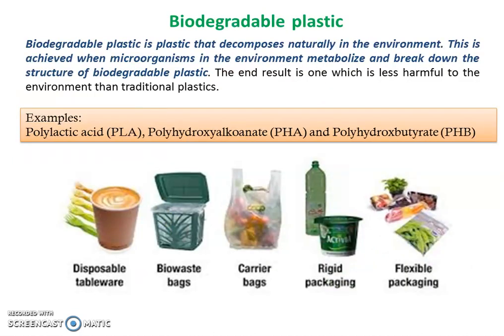So, what is this biodegradable plastic? These biodegradable plastics or bioplastics are the plastics which are derived from renewable biomass sources such as vegetable fats and oils, corn starch, or microbiota — microbiota being the microorganisms living in a specific environment. These biodegradable plastics decompose naturally in the environment. This is achieved when microorganisms in the environment metabolize and break down the structure of the biodegradable plastic, resulting in something less harmful to the environment than traditional plastics.